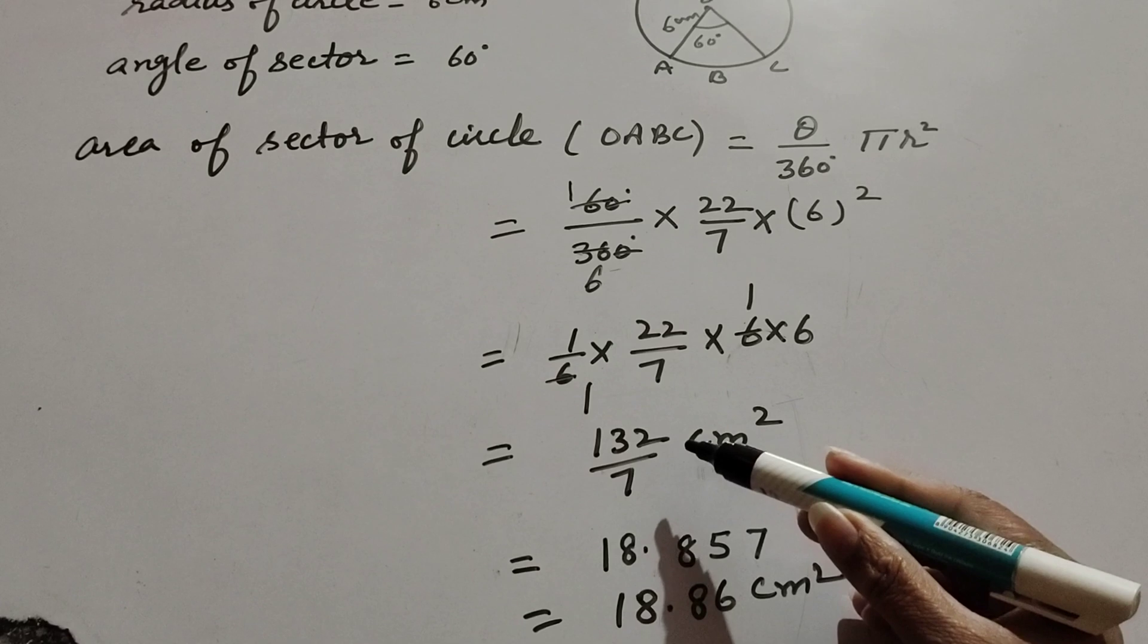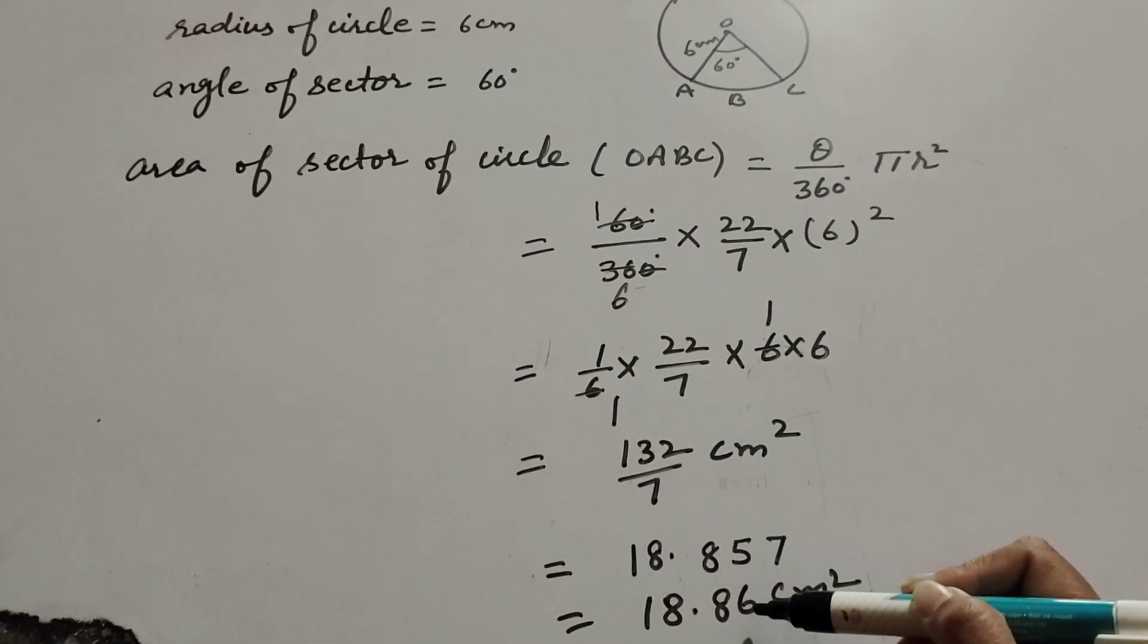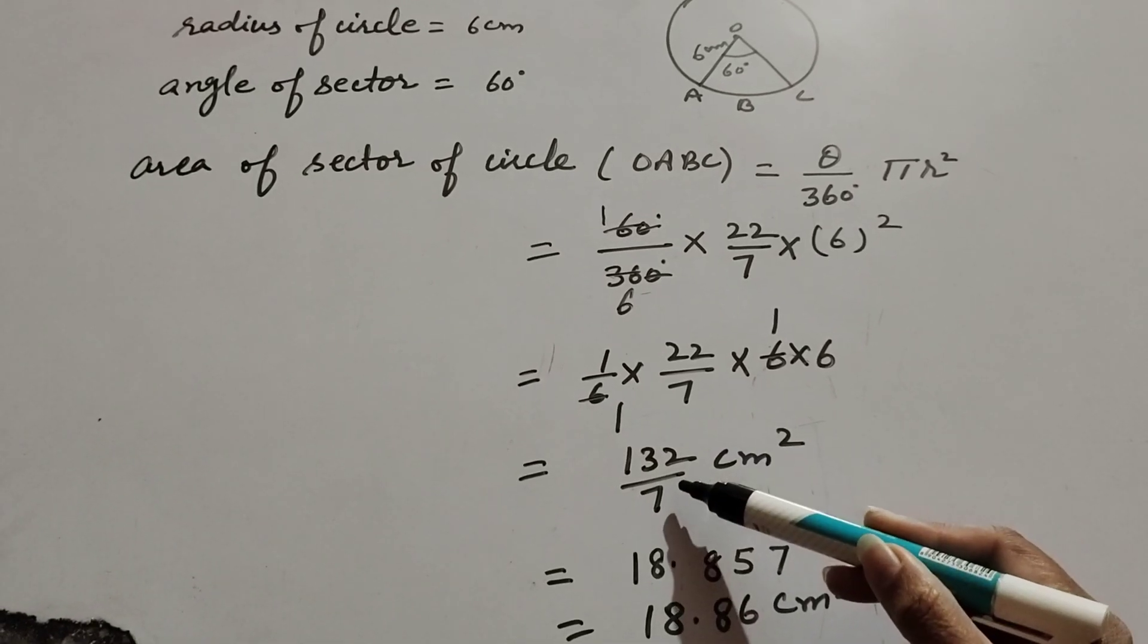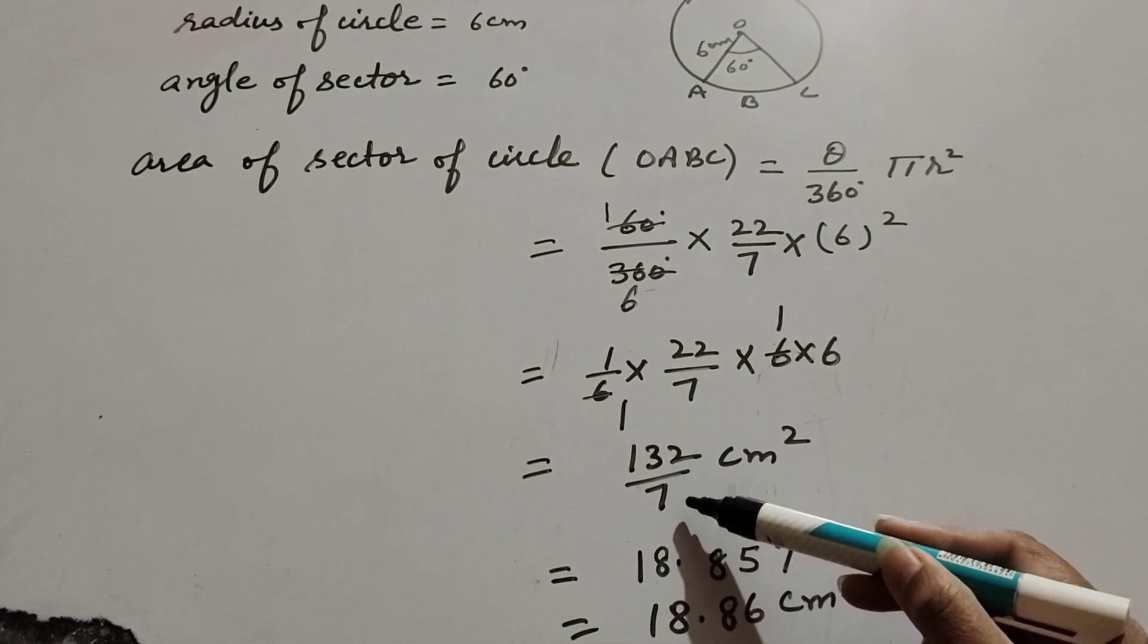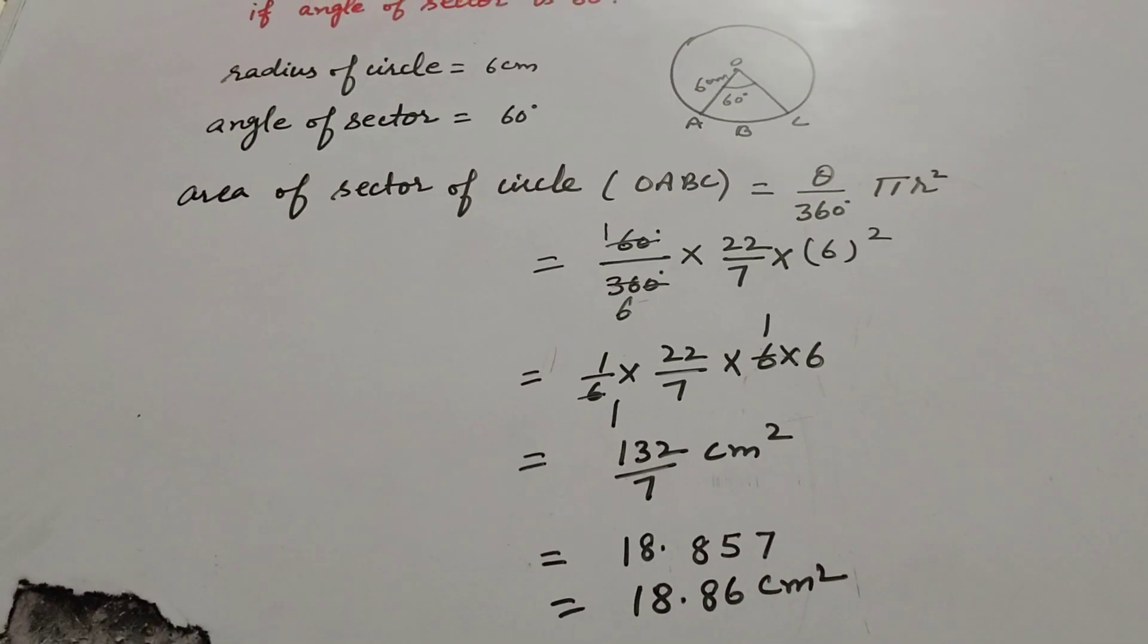132 over 7 cm square is the answer. But if you not change this number into decimal number, then 132 over 7 is the answer of area of sector of circle.